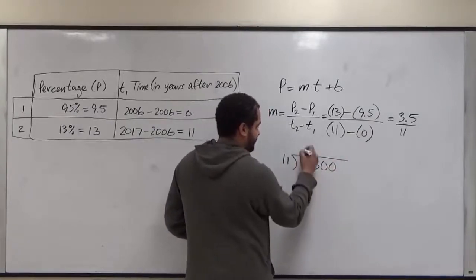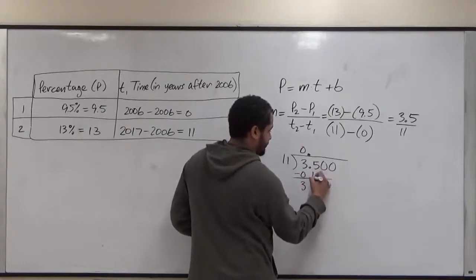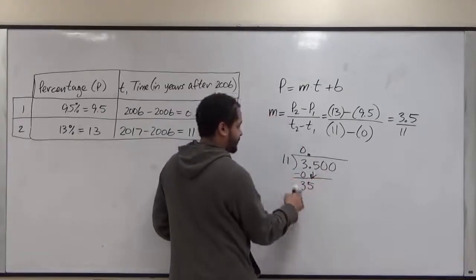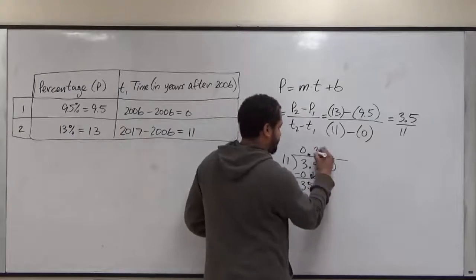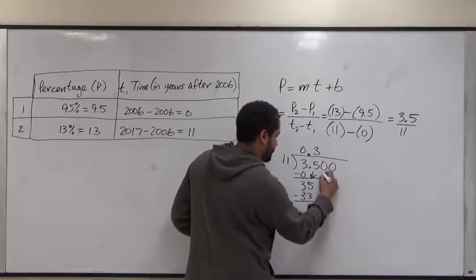How many times does 11 go into 3? That's a zero. We subtract this. We get 3 to come down. The 5 joins it. 11 goes into 35 three times. That's 33 here. We subtract. This becomes 2. We bring down the next zero.